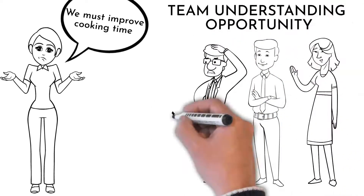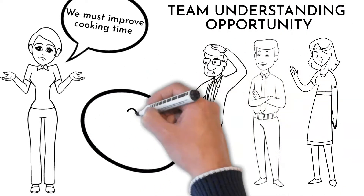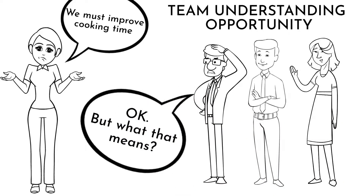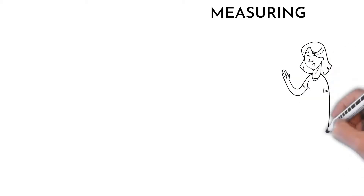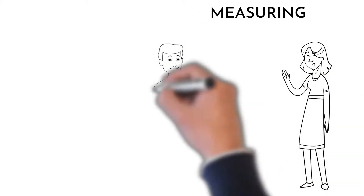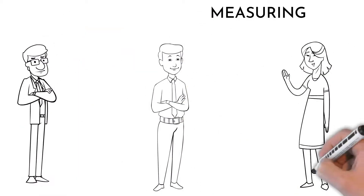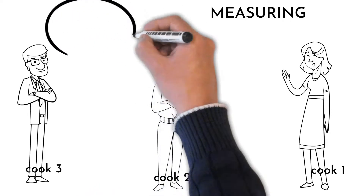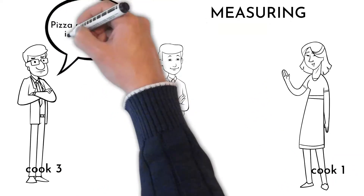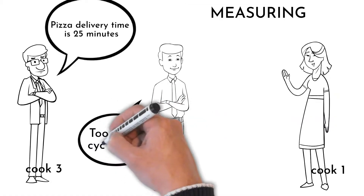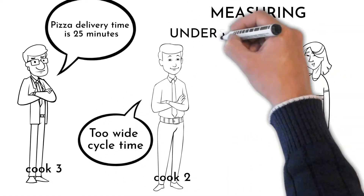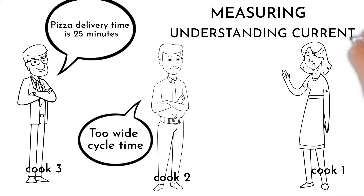A crucial step was to understand what 'getting food faster' actually means. There are three employees, each taking an order from beginning to end. Delivery time was 25 minutes on average, but with a variance ranging from 15 to 40 minutes. This time is also called cycle time, and it was revealed by mapping and measuring the current state process.